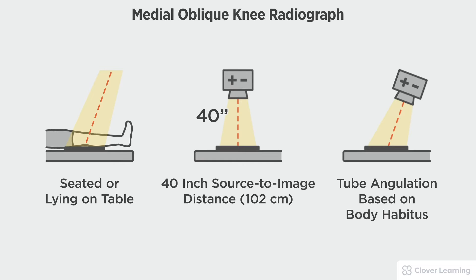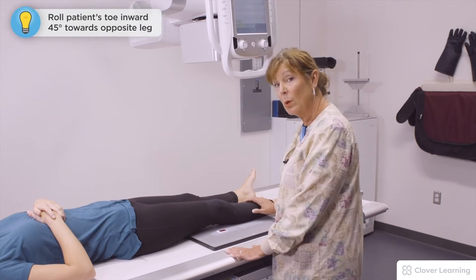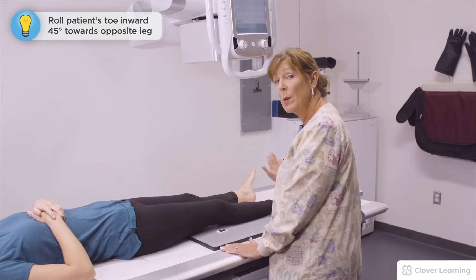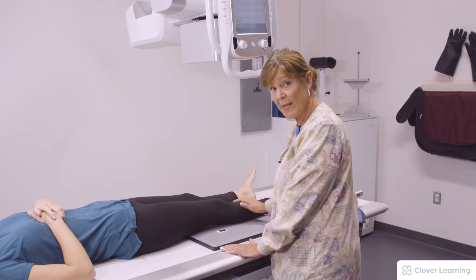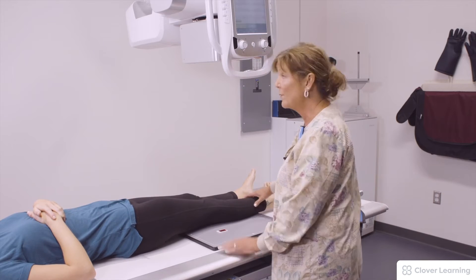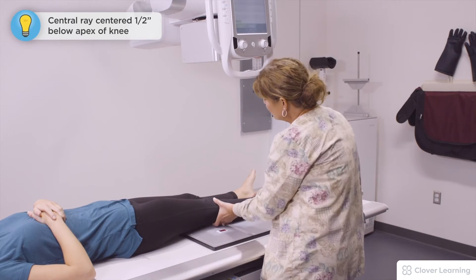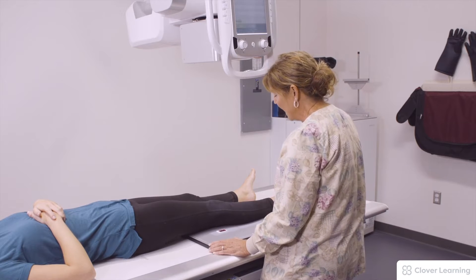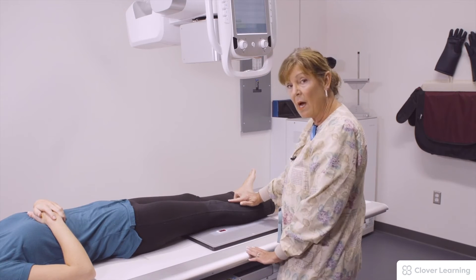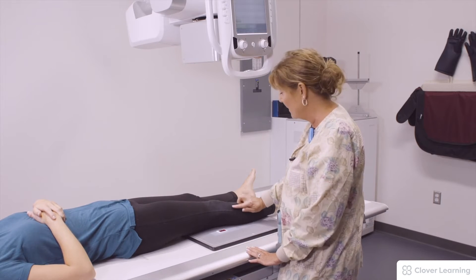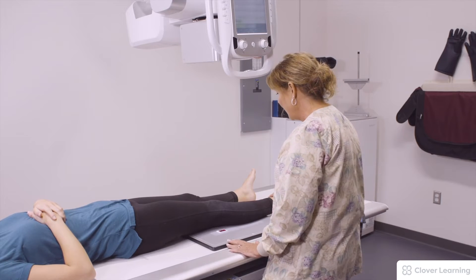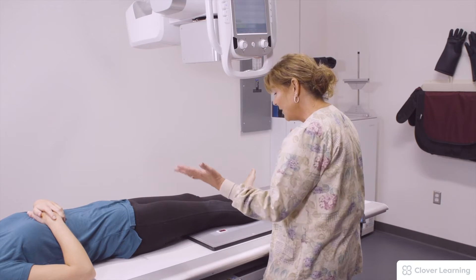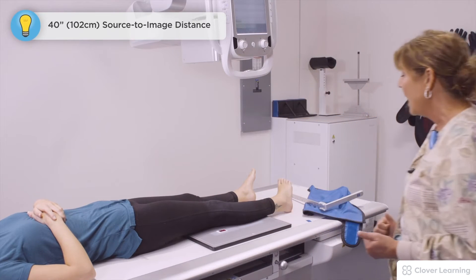For the medial oblique, we're going to have her roll her toe inward toward the other toe — that is 45 degrees. The central ray is in the exact same place, a half inch below the apex. This will open up the space between the tibia and the fibula. We're going to have her hold very still; everything else remains the same.